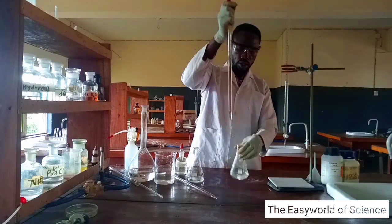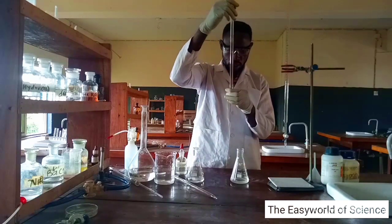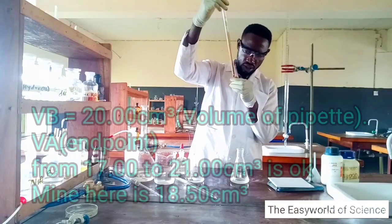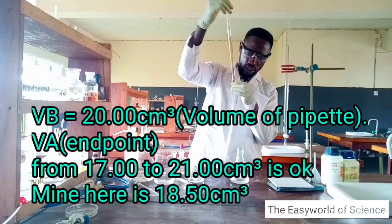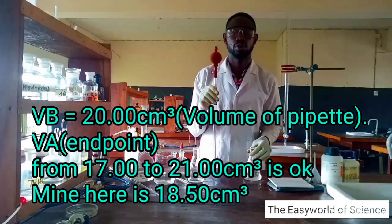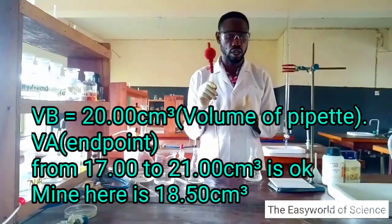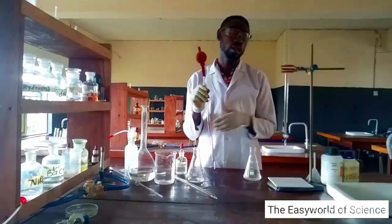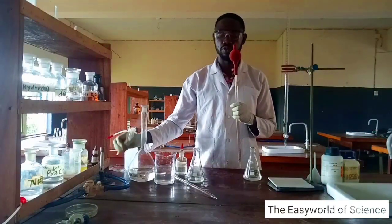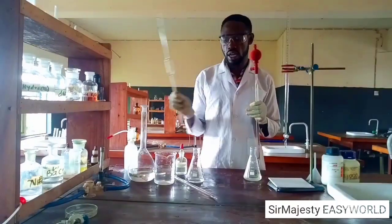The final reading is 18.5. So when I used 20 cm³ portions of B, it was neutralized by 18.5 cm³ of A. But when I used 25 cm³ portions of B, it was neutralized by 24.5 cm³ of A.